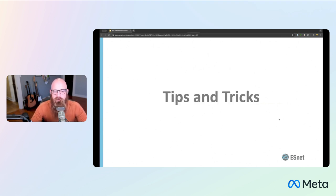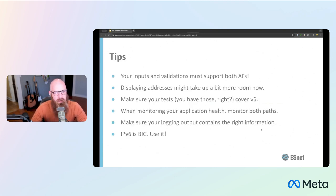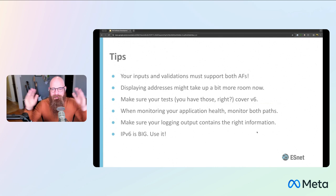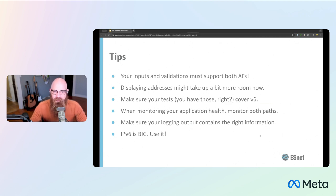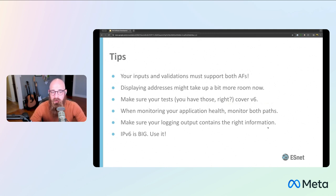A few tips and tricks I've learned. On inputs and validations: you've got to support multiple address families. If you've written a form that accepts an IP address, you've now got to support multiple formats, and there's a bit more complexity to be aware of. If you're displaying addresses and just displaying the value returned from the database, something that was this big is now this big — 128 bits versus just 32. Make sure your libraries can be dynamic enough to handle that. Your tests — make sure they cover V6 and all the V6 bits of your code path, which is harder than you might think, like with ULA. When monitoring, make sure to monitor both paths — V6 and V4 can come from completely different physical network paths. Make sure your monitoring is aware so you can see where issues lie when they inevitably come up.